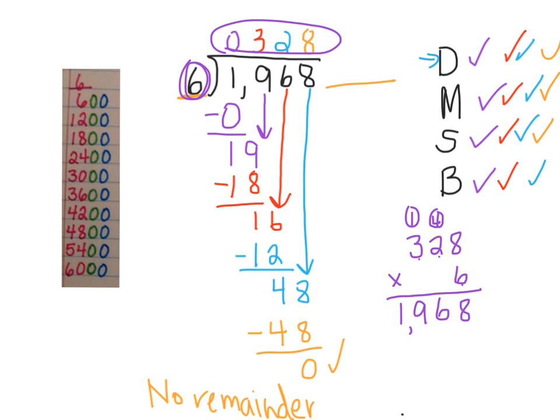I got the same result as I had started with, 1,968. So I know that my answer, my quotient of 328, must be correct.